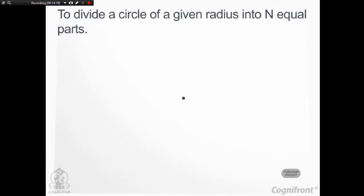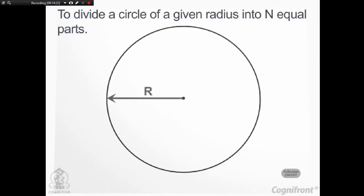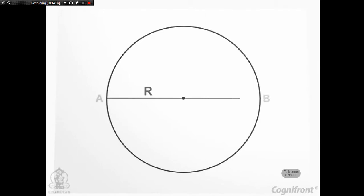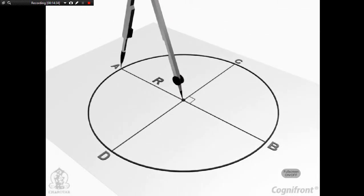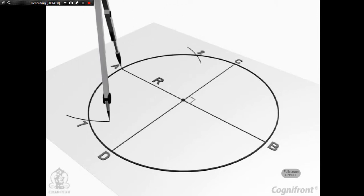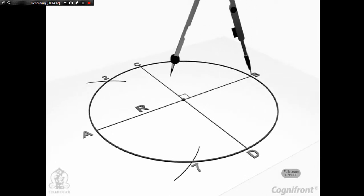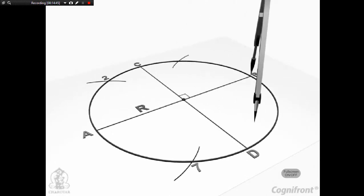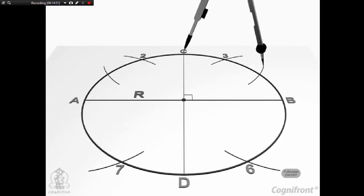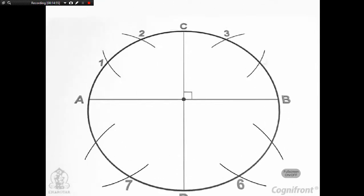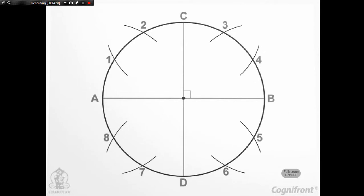To divide a circle of radius R into 12 equal parts: first draw two diagonals AB and CD at right angles to each other. With A as center and radius equal to R, draw arcs cutting the circle at 2 points, 2 and 7. Similarly, with B as center draw arcs cutting the circle at points 3 and 6. Repeat the above steps for points C and D to get intersection points 1 and 4, and 5 and 8 respectively. The circle has now been divided into 12 equal parts.